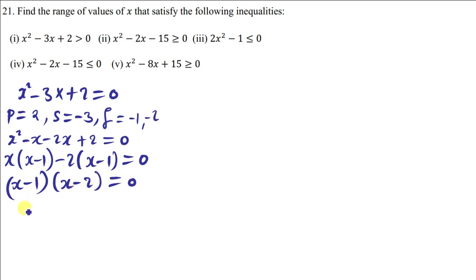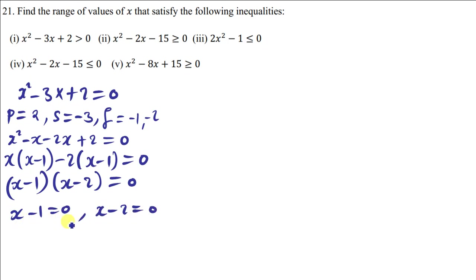Equating both factors to zero, we get x minus 1 equals zero and x minus 2 equals zero. Taking the constants to the other side, x equals positive 1 and x equals 2.